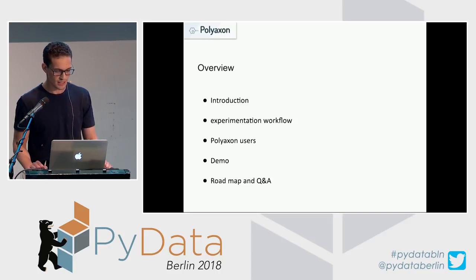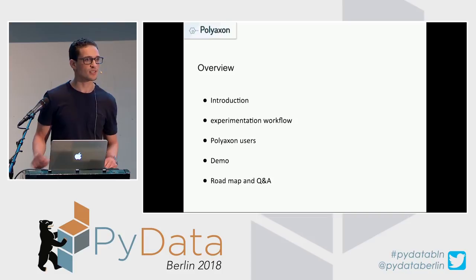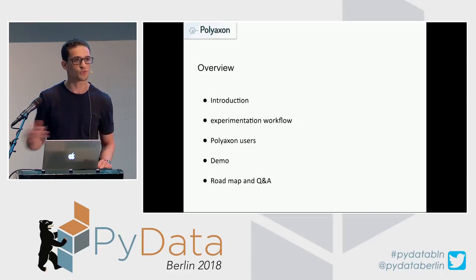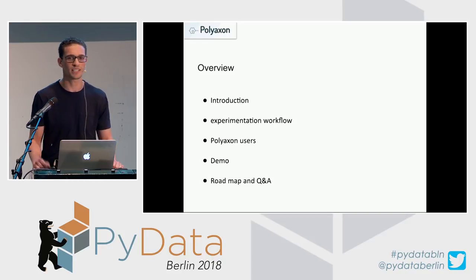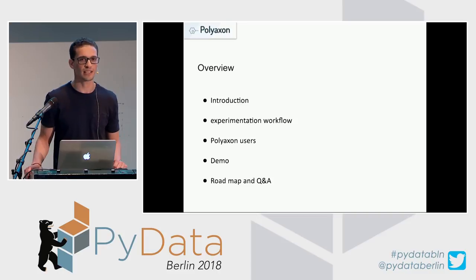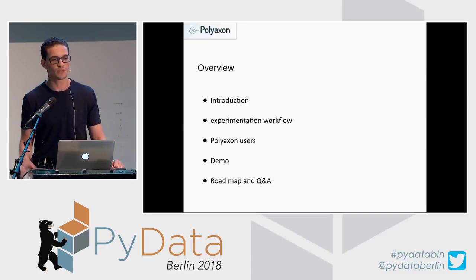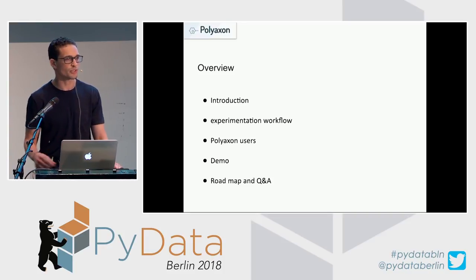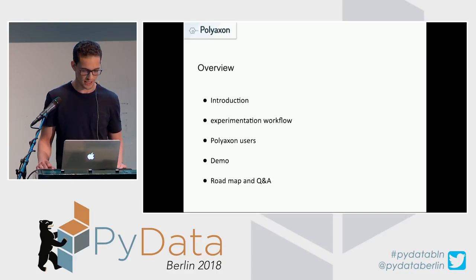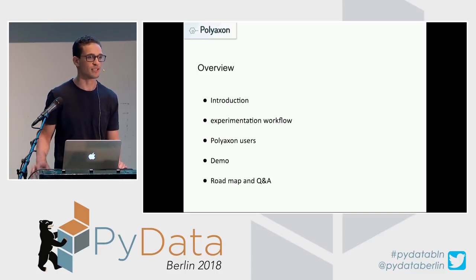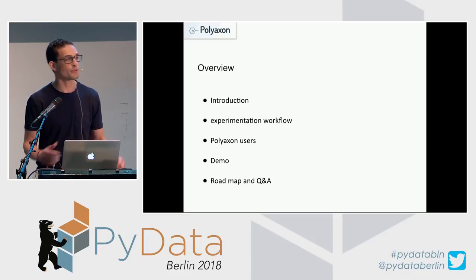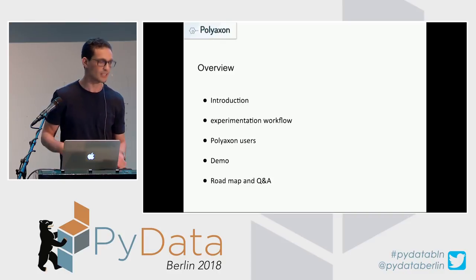I call it the experimentation workflow, and then I'll talk about the users we target with this platform — direct users and indirect users — and then we'll dive into a demo tutorial. You can follow along, but you'll need a cluster. You can use Minikube, but you'll also need to download Docker images and install packages, which the internet may not allow. During the demo, feel free to ask questions, and at the end I'll give an overview of the project roadmap for the near term.